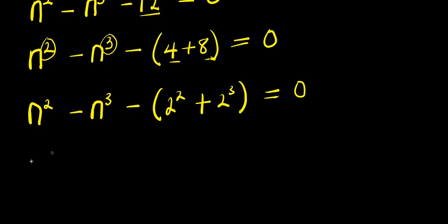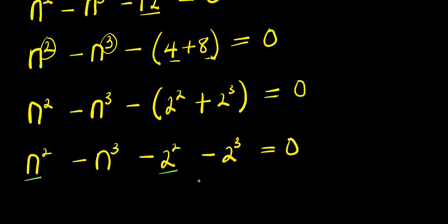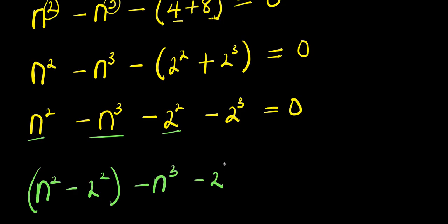We multiply this out: n power 2 minus n power 3 minus 2 power 3 equals 0. We group these: n power 2 minus 2 power 2, then minus n power 3 minus 2 power 3 equals 0.